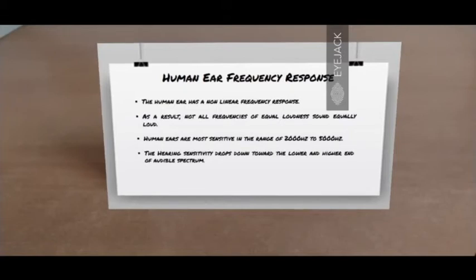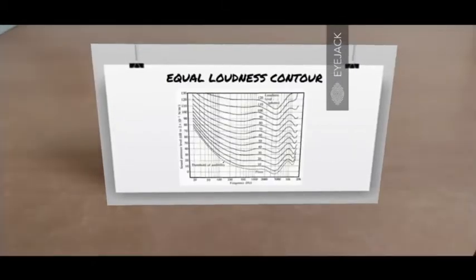This is the equal loudness contour. This is a graphical representation of how the human ear perceives sound of different frequencies to be equally loud. The unit of loudness is phon, spelled as P-H-O-N, and these are also referred to as Fletcher-Munson Curves.